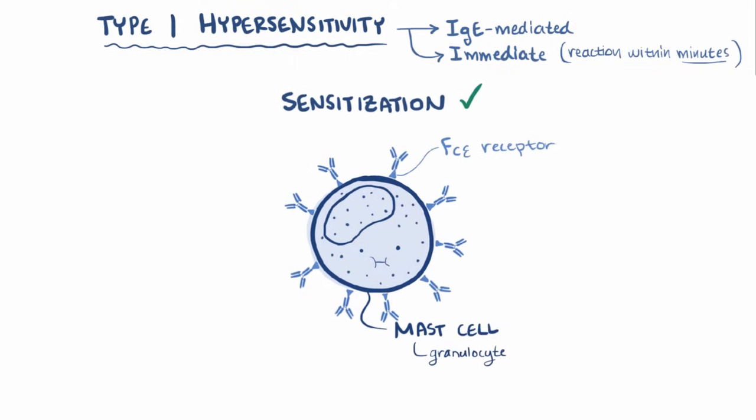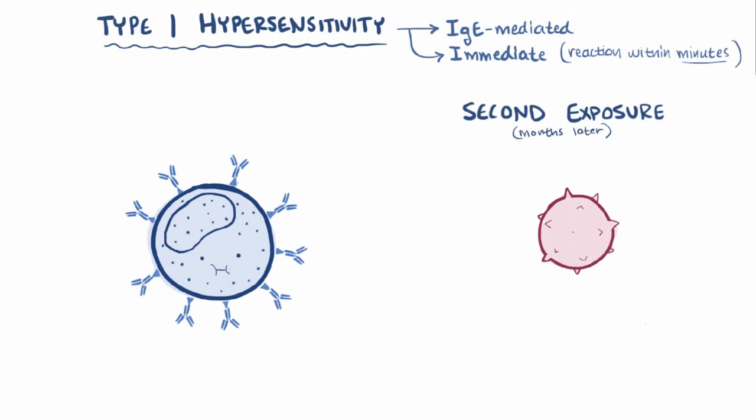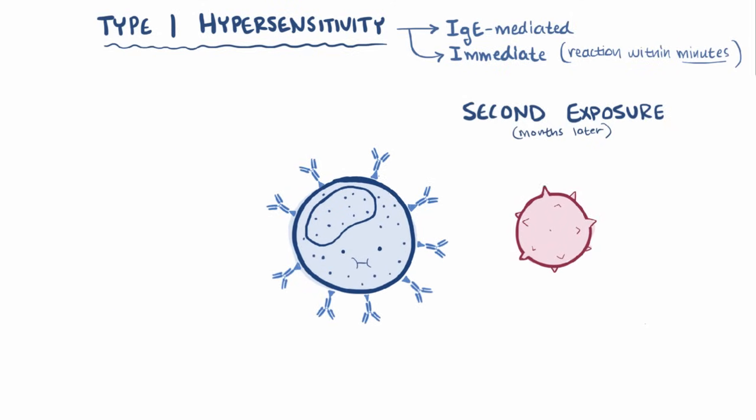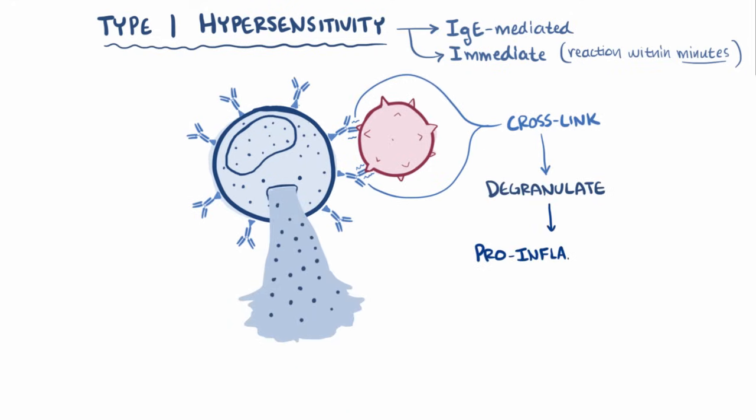Now let's say that that same person breathes in some ragweed pollen again. Maybe a few months later, a second exposure. Well, the souped-up mast cells, using their coat of antibodies, binds to the antigen. Actually, it takes two or more bound antigens to cross-link the IgE antibodies, which signals the mast cell to degranulate and release a bunch of pro-inflammatory molecules called mediators, that ultimately causes the effects seen in an allergic reaction.